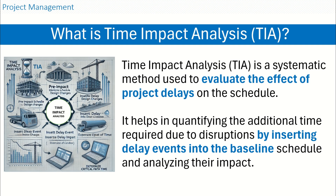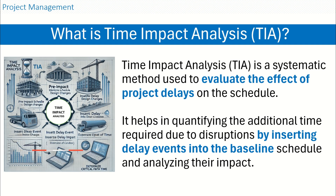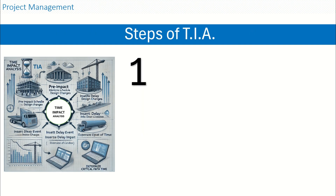Time impact analysis, or TIA, is a systematic method used to evaluate the effect of project delays on the schedule. It helps quantify the additional time required due to disruptions by inserting delay events into the baseline schedule and analyzing their impact. You need to have a baseline schedule and a delay register — where the project team records delays since inception — as the two main tools to perform TIA.